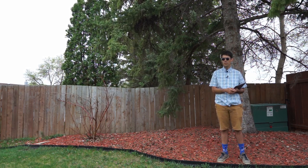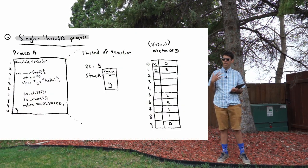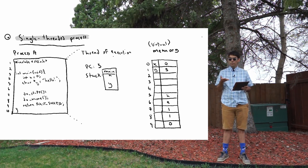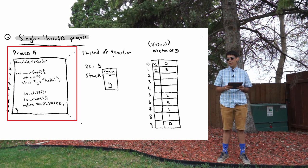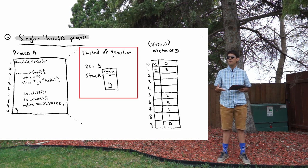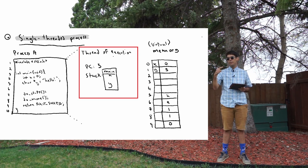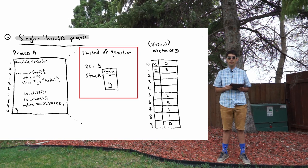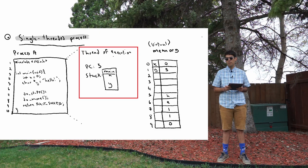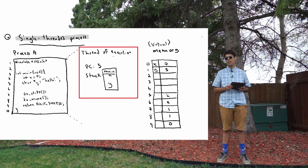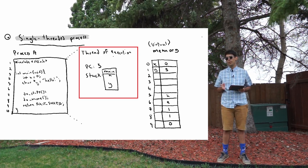I've drawn a diagram I want to step you through. We've got a process — I've called it process A — representing a running program. Process A when it's running has a single thread of execution, which means it has exactly one program counter, one PC. Only one instruction of that program is executing at any given time. So process A has exactly one thread of execution and one program counter.